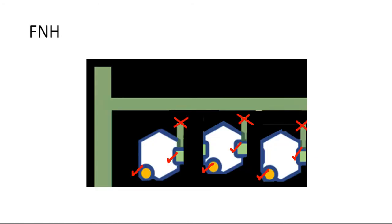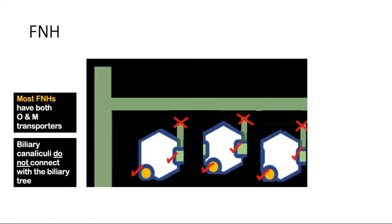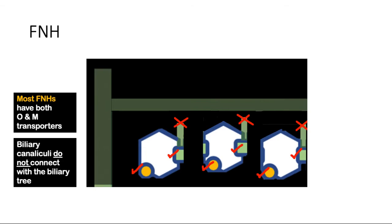How about FNH? FNH is just a bunch of benign hepatocytes that proliferate due to a pre-existing vascular malformation. Since there are hepatocytes, you will have your O and M transporters. It also has biliary canaliculi, but these biliary canaliculi do not connect with the biliary tree. Can you guess what will be its appearance on the hepatobiliary phase? The answer is that FNH will show enhancement in the hepatobiliary phase, similar to or more than the liver parenchyma.